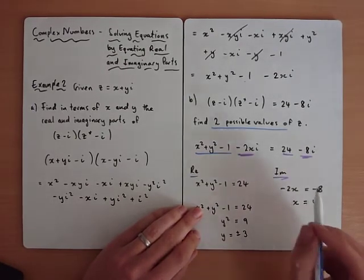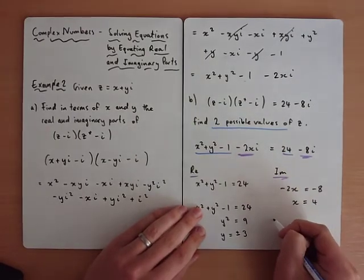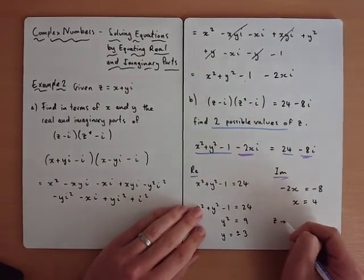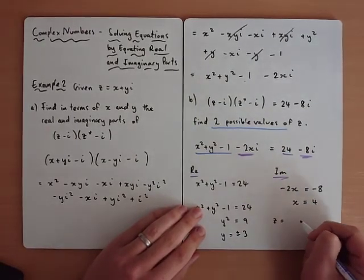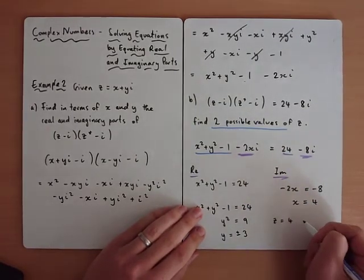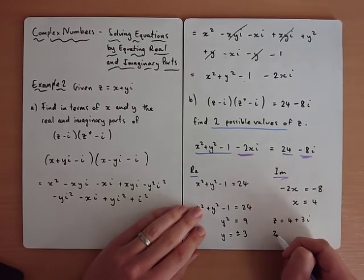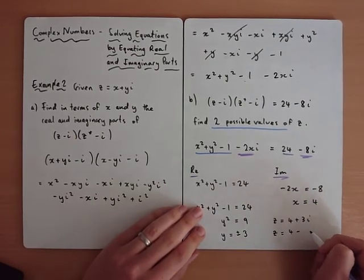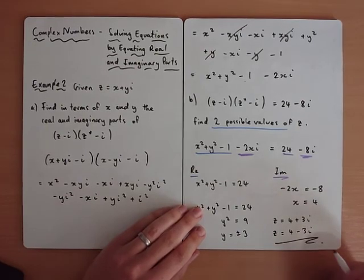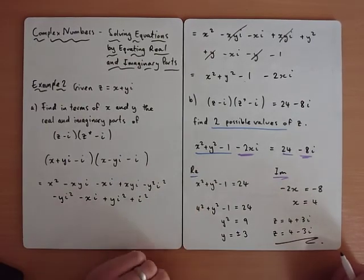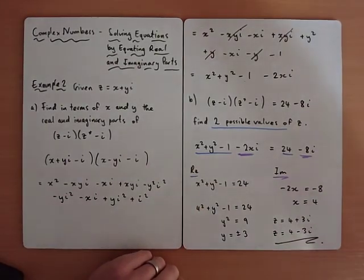So Z equals x plus yi, giving the two solutions: Z equals 4 plus 3i, and Z equals 4 minus 3i.